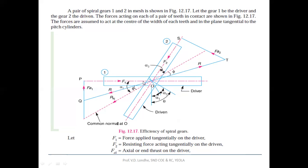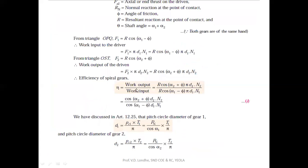F1 is the force applied tangentially on the driver, which is the tangential force, and F2 is the tangential resisting force acting on the driven gear for circular motion. This tangential component is very important because without it there will be no rotary motion. FA1 and FA2 are the axial forces respectively. R is the resultant force, RN is the normal force, and the shaft angle is the angle made by the axis of both shafts, given as alpha 1 plus alpha 2.